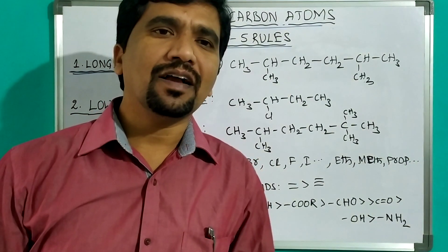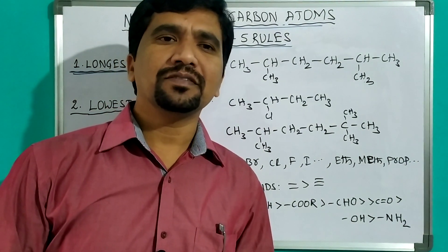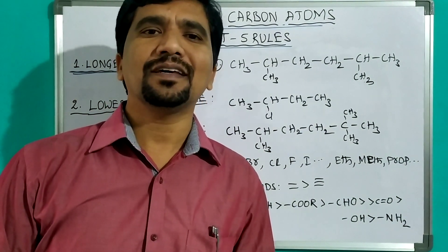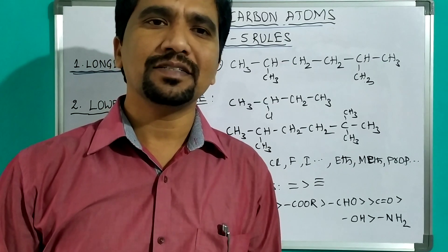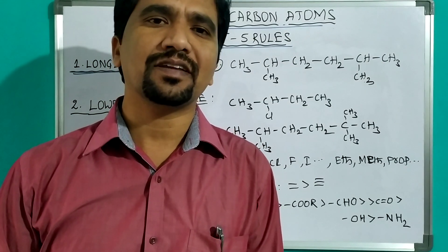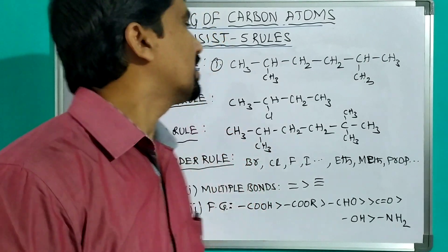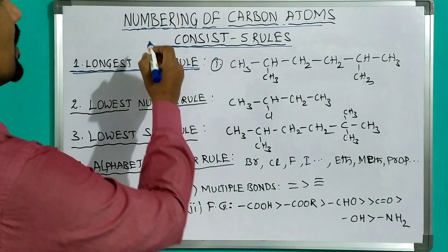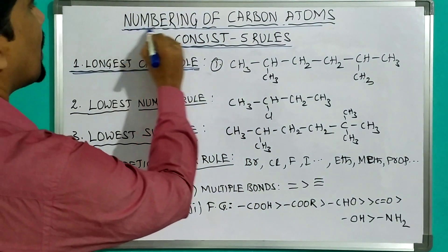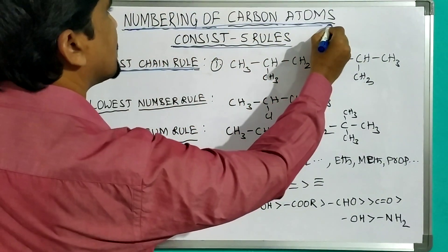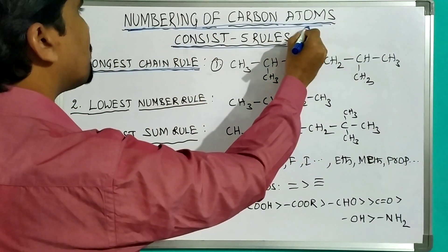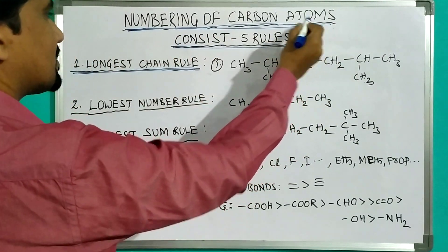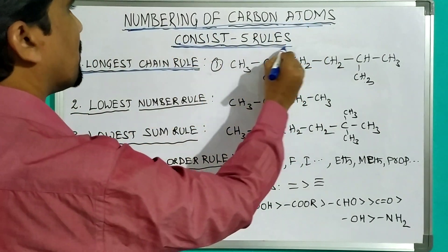Before naming the carbon compounds, we must assign the numbering for the carbons in the given structure. This numbering of carbon compounds consists of five rules.